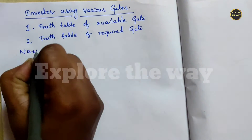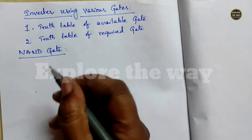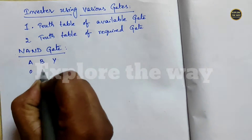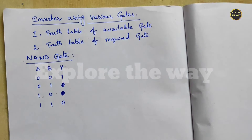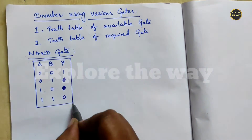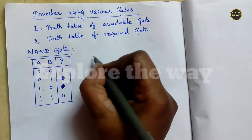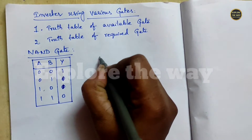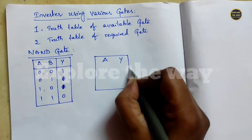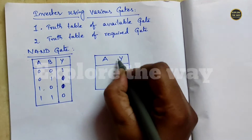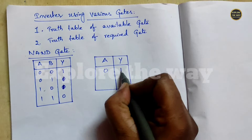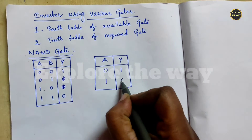First I want to derive inverter functionality from a NAND gate. This is the available gate, and this is the functionality of the NAND gate. The inverter functionality is: when the input is A and the output is Y, the output is the complement of the input — if the input is 0, output is 1; if the input is 1,